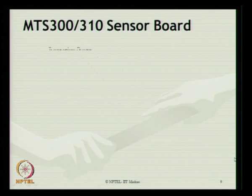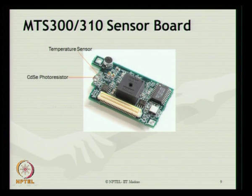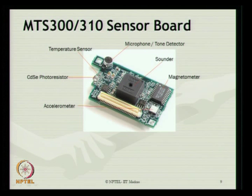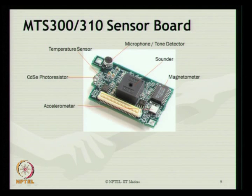The MTS 300/310 sensor board is the basic configuration of the sensor. The sensor board has an expandable connector, a photo resistor, a sounder, a magnetometer, a microphone to collect vibrations of sound as a tone detector, and an accelerometer which can record vibration on whatever surface it is placed.